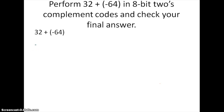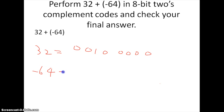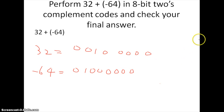For 32 and negative 64: for 32 it is 0 0 1 0 0 0 0 0 0. For negative 64, we first find the code for 64 which is 0 1 0 0 0 0 0 0 0. To find the negative number, we turn it all into the opposite side.